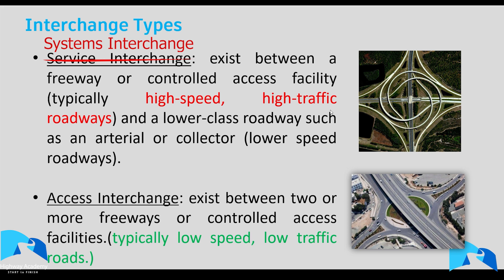When choosing the type of interchange, consider whether you need a service interchange — for example, where two motorways meet and different movements are required. The difference among service interchanges is based on level of service: if you want a higher level of service, use a semi-directional ramp; for a lower level of service, use a loop.